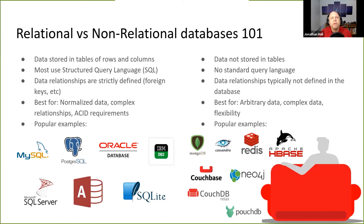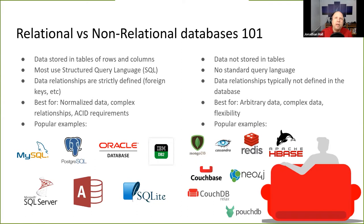Non-relational databases are broadly best for arbitrary data, complex data, and flexibility. Popular examples include MongoDB — probably the most famous — Redis, Cassandra, and CouchDB. A quick note on CouchDB versus CouchBase: they used to share a common codebase, but CouchBase went off as a commercial venture and changed their API, so they're no longer compatible. Think of the relationship between CouchBase and CouchDB as the same as between Java and JavaScript.